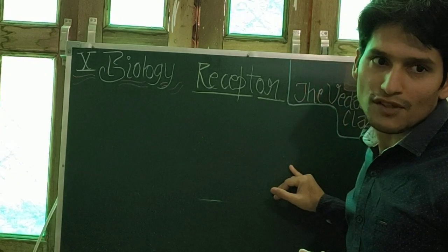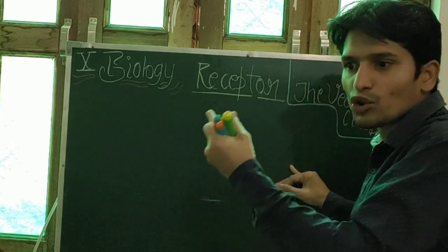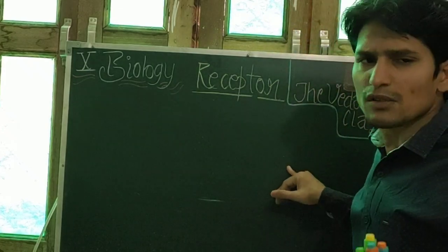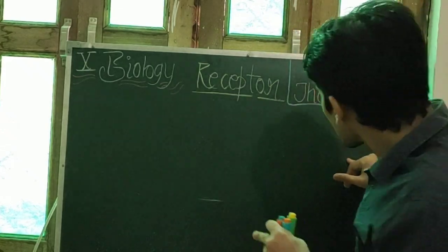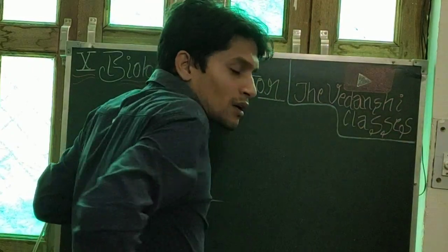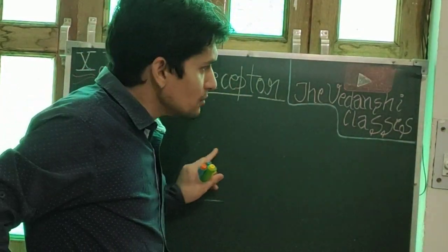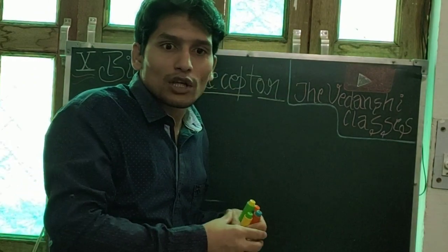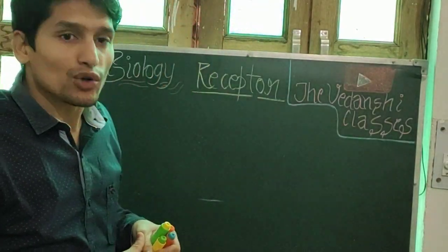Autonomous nervous system has sympathetic and parasympathetic divisions. Chemical coordination happens through the hormonal system, which is called the endocrine system.